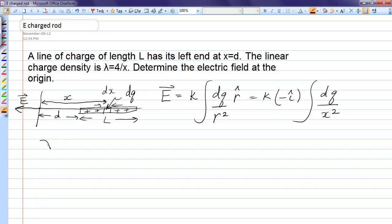We can write the linear charge density as dq over dx, or we can write dq equals lambda dx. That's how you get rid of dq in the integral and put it in terms of x. In our case, lambda is not a constant. It is a function given by 4 over x dx.